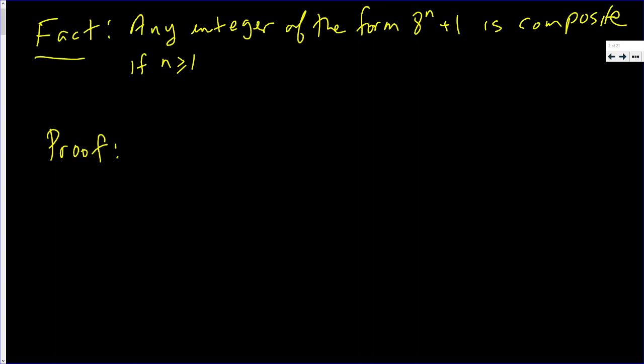In this video, we're going to prove the following fact: Any integer of the form 8^n + 1 is composite if n is at least 1.